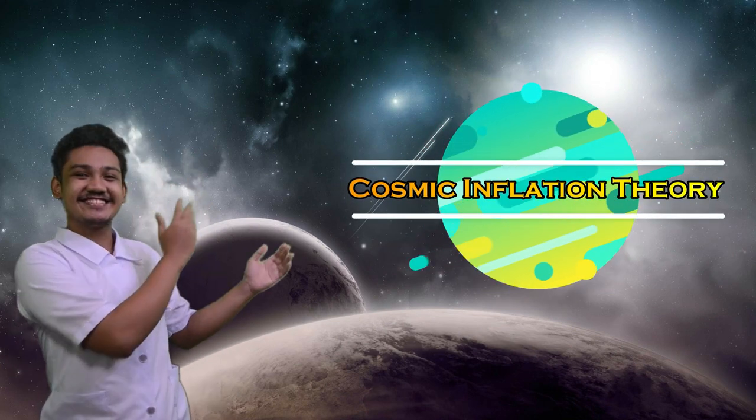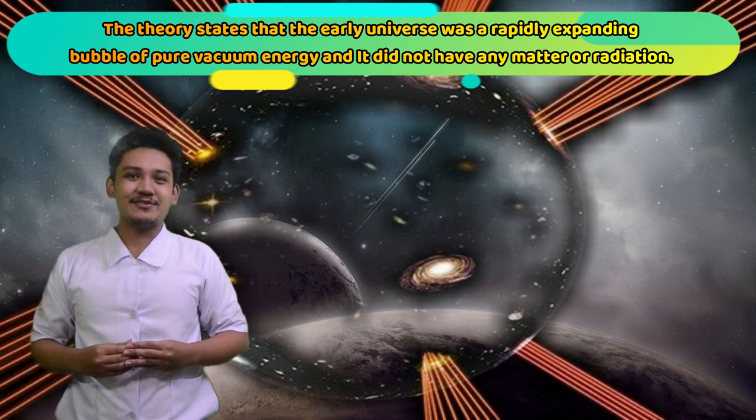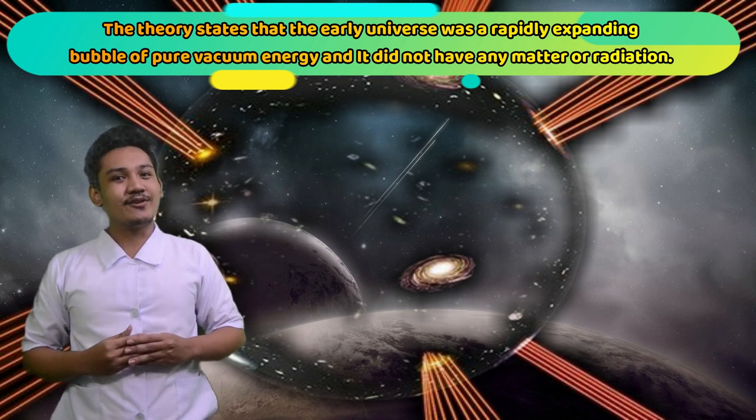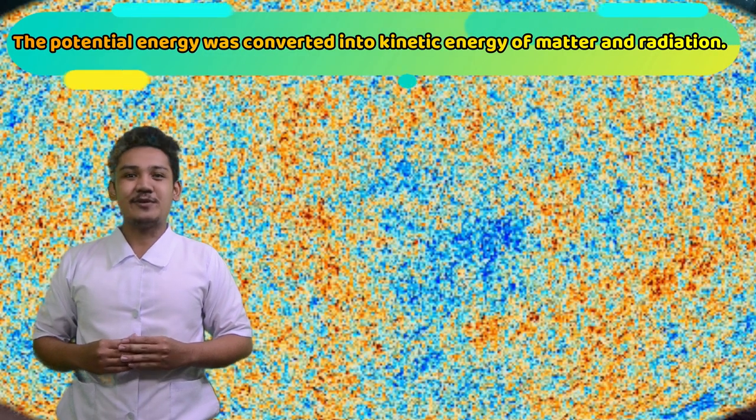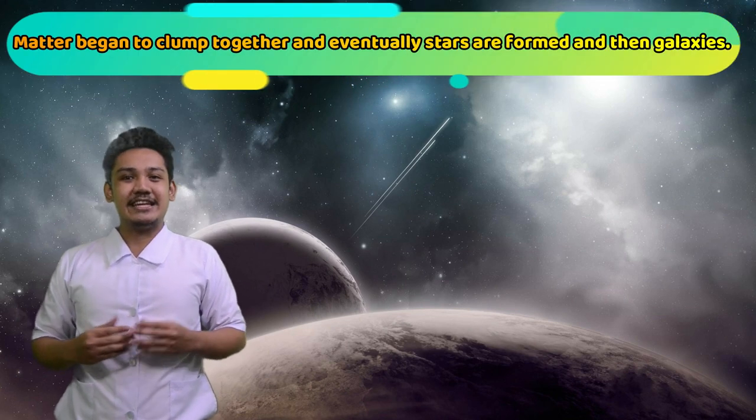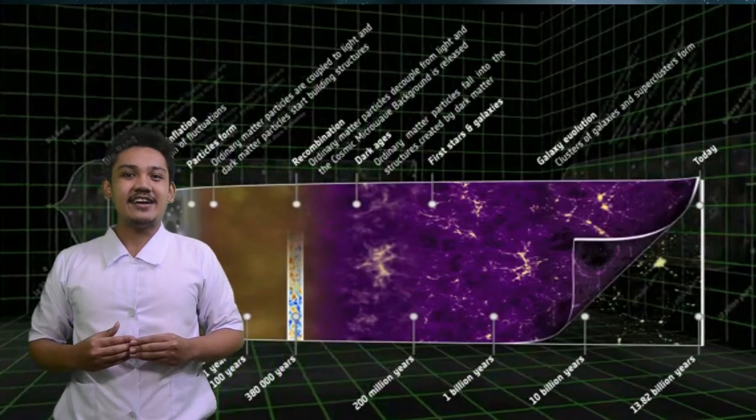The next one is the Cosmic Inflation Theory, which is proposed by physicists Alan Goode and Andre Ling in the 1980s. According to them, the theory states that the early Universe was a rapidly expanding bubble of pure vacuum energy and it did not have any matter or radiation. After the expansion, the cooling during the explosion, the potential energy was converted into kinetic energy of matter and radiation. Then, a big bang appeared. After the explosion, matter began to clump together and eventually stars are formed and then the galaxies. The Universe continued to expand up to the present time.